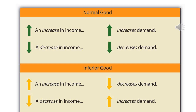For normal goods, the more income you have, the more you will buy of something — for example, the more income you have, the more cinema tickets you'll buy. However, one range of goods behaves differently: inferior goods. With inferior goods, when income increases, demand drops. For instance, when you start earning more, you may stop buying margarine and switch to butter instead.